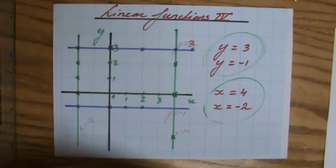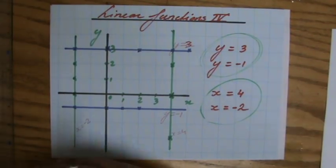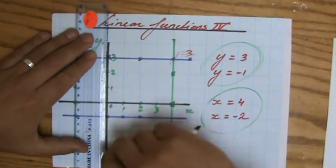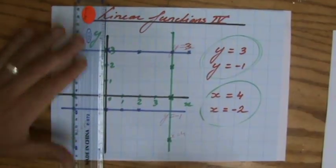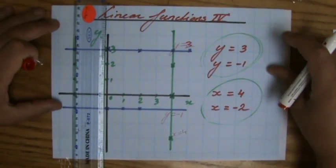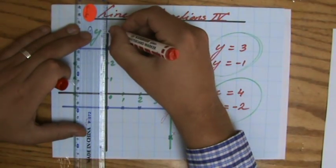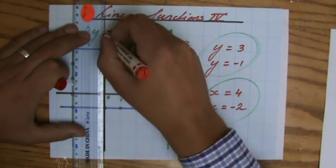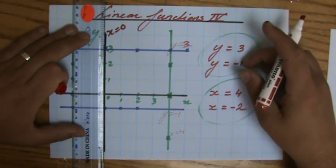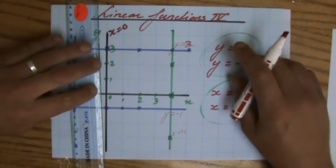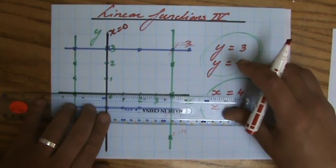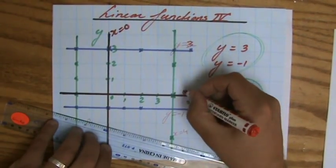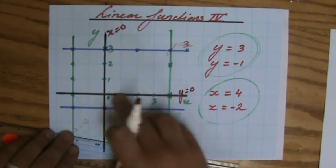Now I'm going to ask you the question, what is the equation of the y-axis? The answer to that, the equation of the y-axis is x equals 0. That is the vertical line where my x coordinate is 0. What is the equation of the x-axis? It's a horizontal line. y equals 0.